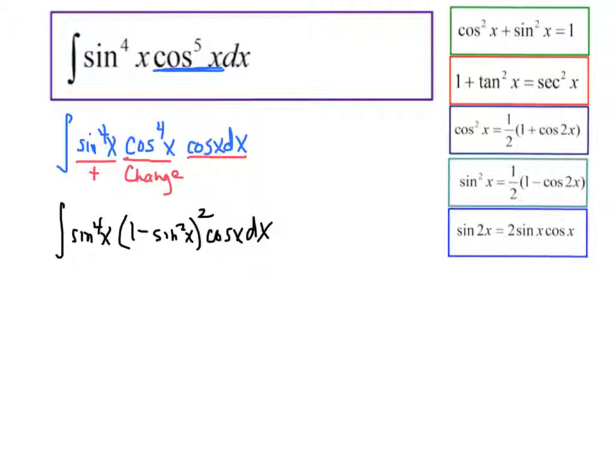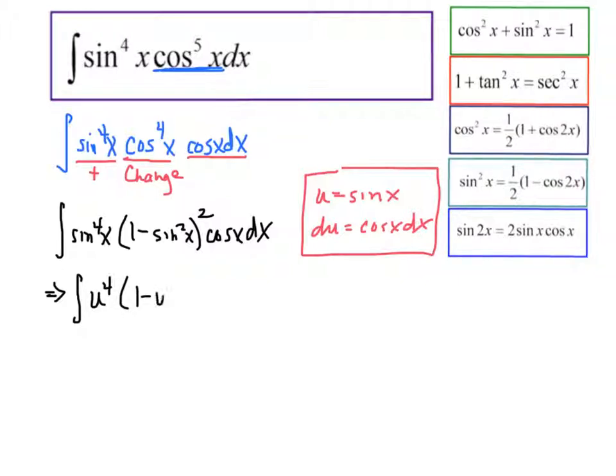Now, let's make our substitution. Let's say that I'm going to put it kind of in this box right here. We're going to make u equal to sine, so du is cosine. So my integral is going to become u to the fourth multiplied by 1 minus u squared squared du. Now, there's not a great way around this other than actually multiplying it out. So I'm going to leave the u to the fourth, and then I'm going to have 1 minus u squared, squared like that.